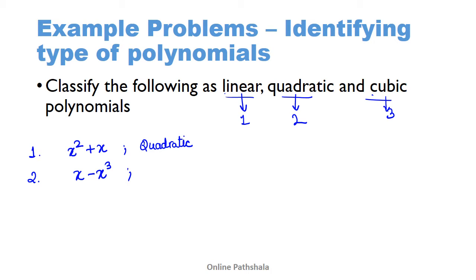Now let us look at the second example: x - x³. In this case, the maximum value — the degree of this polynomial — is three, because x is raised to the power three. So this is an example of a cubic polynomial. Let us look at the third example: y + y² + 4.